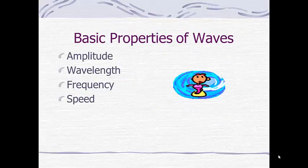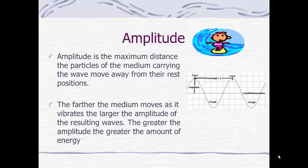Regardless of the type of wave, there's four basic properties that we're going to focus on. Amplitude, wavelength, frequency, and speed. So let's begin with amplitude.